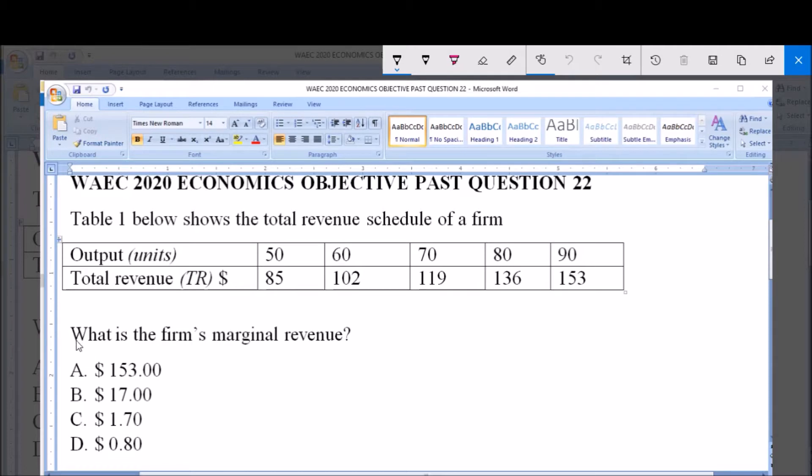Now the question is: what is the firm's marginal revenue? A: $153, B: $17, C: $1.70, D: $0.80. Marginal revenue is what you are calculating, and marginal revenue is equal to the change in total revenue divided by change in total output.